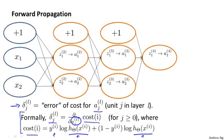And so they're a measure of how much would we like to change the neural network's weights in order to affect these intermediate values of the computation, so as to affect the final output of the neural network h of x and therefore affect the overall cost. In case this last part of this partial derivative intuition didn't make sense, don't worry about it. The rest of this we can do without really talking about partial derivatives. But let's look in more detail about what backpropagation is doing.